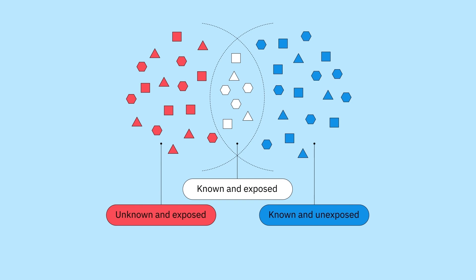By giving businesses an outside-in view on their attack surface, ASM helps move items from the most risky unknown and exposed category over to the known and exposed category, and then prioritize in what order to move those over to the known and unexposed category.